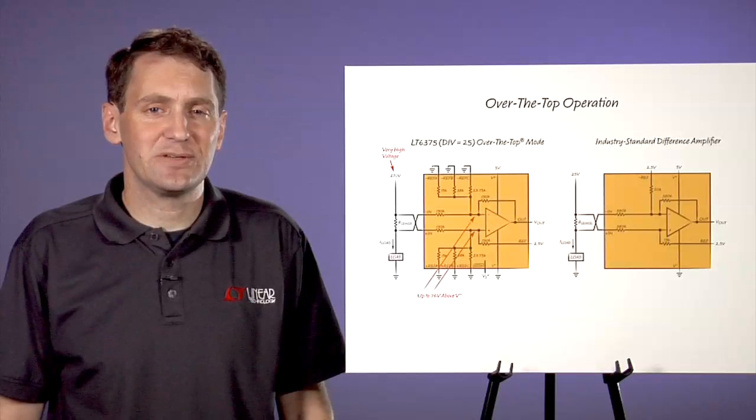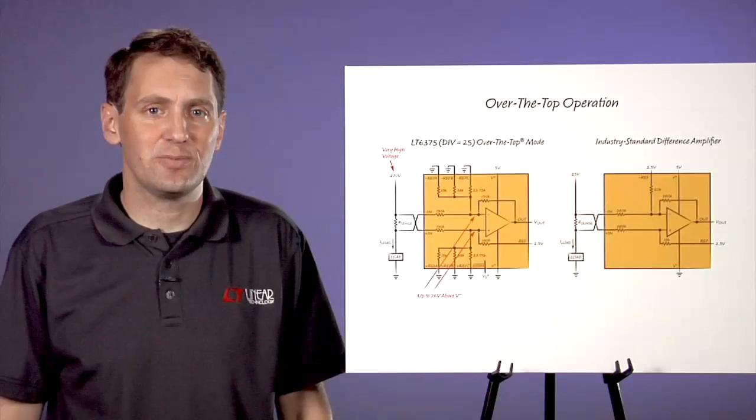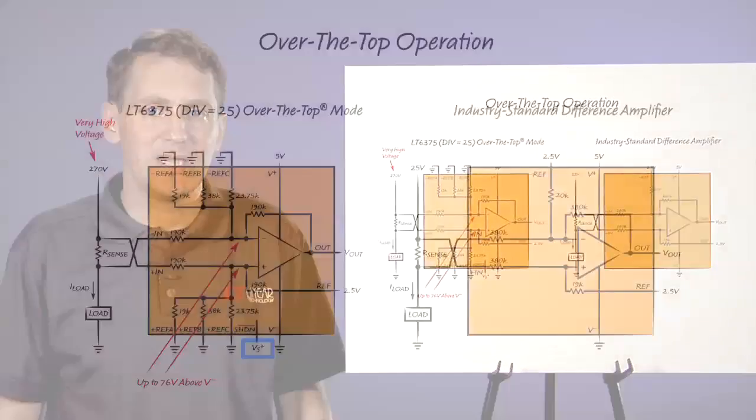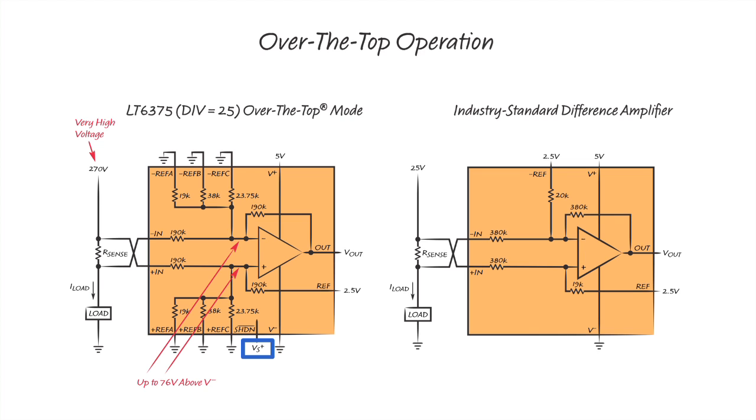The LT-6375 has two additional features unmatched by the competition. It has a shutdown pin that can be used to achieve significant power savings in low duty cycle applications, as well as thermal protection circuitry, which increases robustness by preventing the amplifier from overheating.